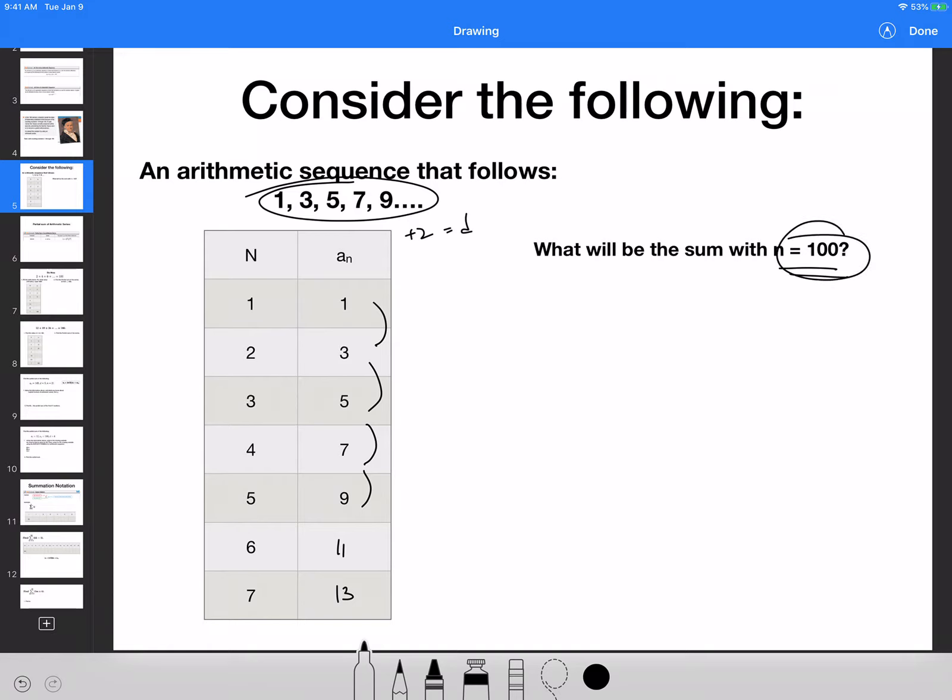First of all, can we continue down this list and find out when n is 100, what my a sub n is going to be? When a sub 100, what's the value? The formula is a sub 1 plus d times n minus 1. In this particular case, the first term will be 1 plus the common difference of 2 times 100 minus 1, which is 99, which gives you 1 plus 198, which gives you 199.